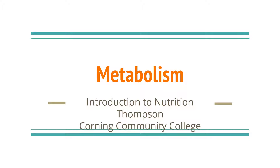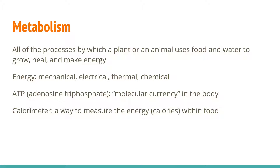Welcome to this lecture on metabolism. We've recently talked about digestion and learned about the three macronutrients: carbohydrates, fats, and proteins, and we've been using the word metabolism. So let's give it a definition and talk about it in more detail. Metabolism, by definition, is the sum of all the processes by which a plant or animal uses food and water to grow, heal, and make energy for the body to use for all other functions.